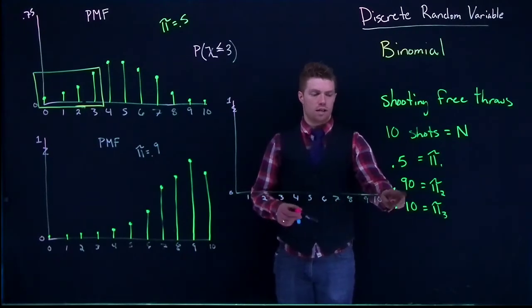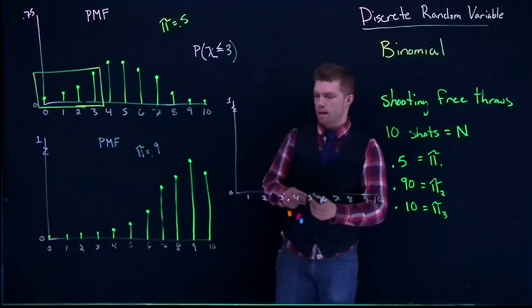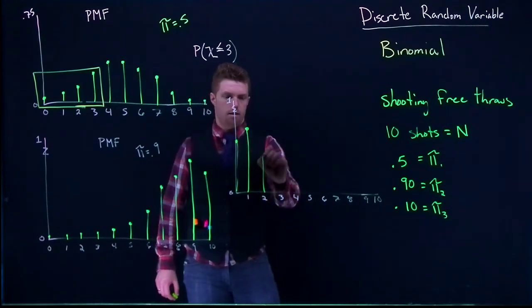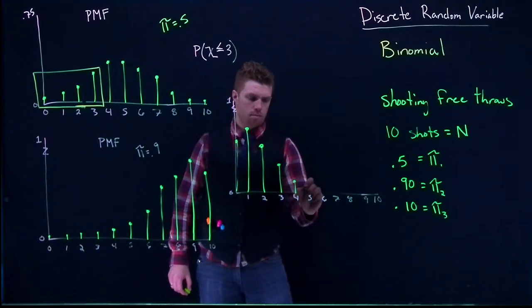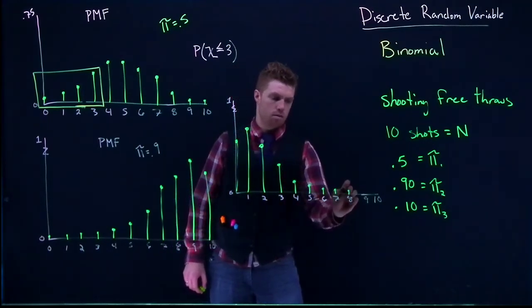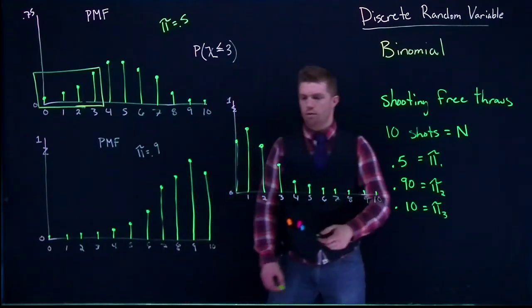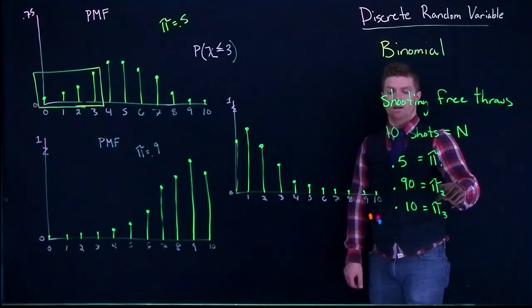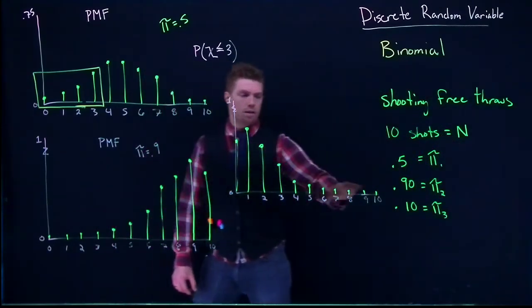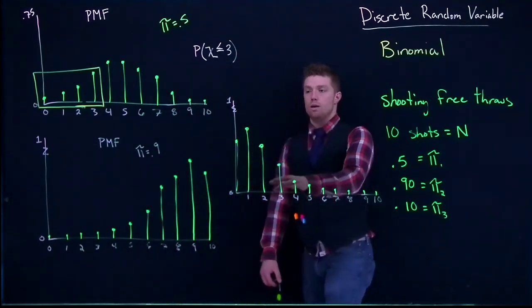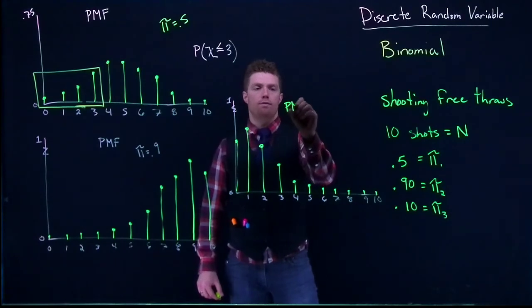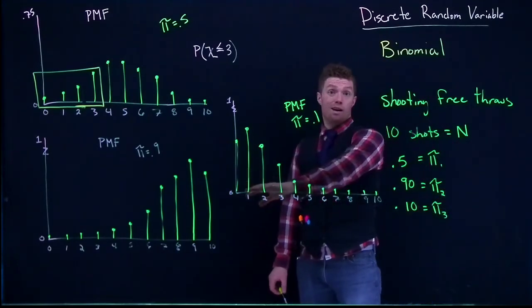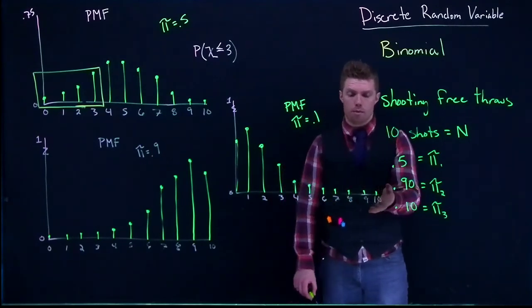The probability of success is here very small. So this guy is going to be really high. This guy is going to be kind of high. These pi 2 and pi 3, they're just the complements of one another. Did you notice that? I just kind of flipped how these probabilities look like. This is our PMF where pi equals 0.1. We've got a large probability of not making very many free throws and a low probability of making a lot of free throws.